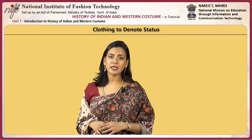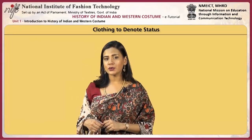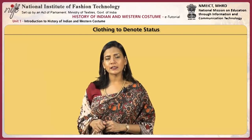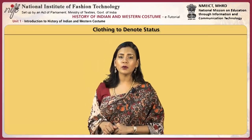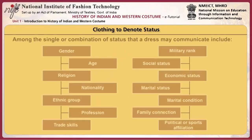Dress as a symbol of status arguably developed at a later phase. Conveying status through dress can be so complex and subtle that recognizing its meaning usually requires special training from the earliest age within a society. Among the single or combination of statuses that a dress may communicate include gender, age, religion, nationality, ethnic group, profession, trade skills, military rank, social status, economic status, marital status, marital condition, family connection and political or sports affiliation.